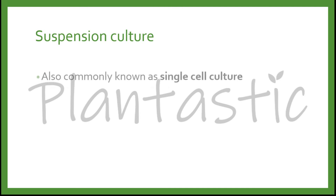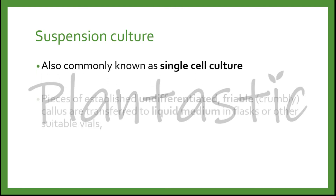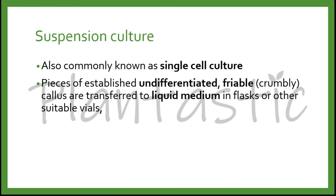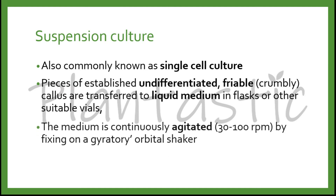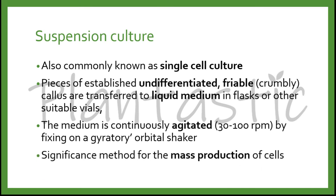Suspension culture is also known as single-cell culture. It uses pieces of established undifferentiated or fibrous callus that are transferred to a liquid medium in a flask or other suitable vials. The medium is continuously agitated at around 30–100 rpm by fixing on a gyratory orbital shaker. It is a significant method for the mass production of cells.